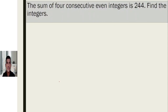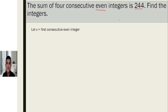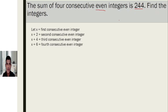Let's have example number three: The sum of four consecutive even integers is 244. Find the integers. In consecutive even integers, the common difference is two. If we let x be the first consecutive even integer, the next would be x plus two, the third x plus four, and the fourth x plus six. Their sum should be 244, giving us: x plus (x plus two) plus (x plus four) plus (x plus six) equals 244.